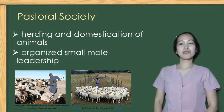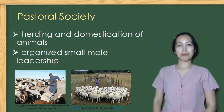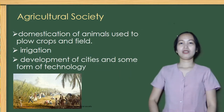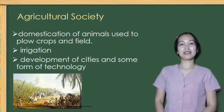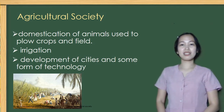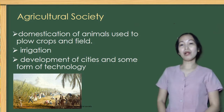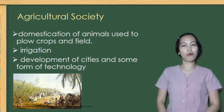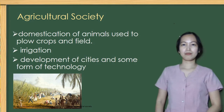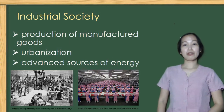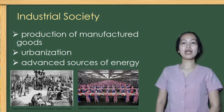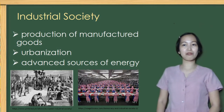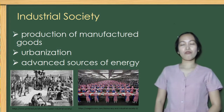Next is agricultural society. Under this society, animals were domesticated to plow crops and fields. They also had irrigation, development of cities, and some form of technology. Fifth is industrial society, where production of manufactured goods and urbanization happened. They also had advanced sources of energy.